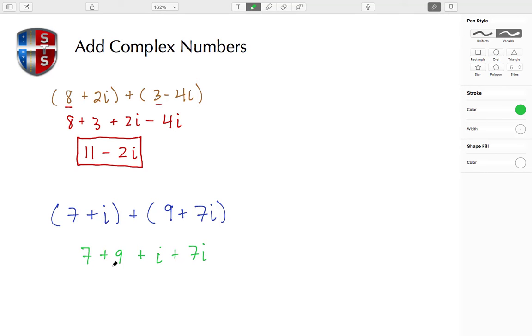In doing so, 7 plus 9 gives me 16, and then here I have 1i plus 7i gives me 8i's. So 16 plus 8i is the sum of the two complex binomials.